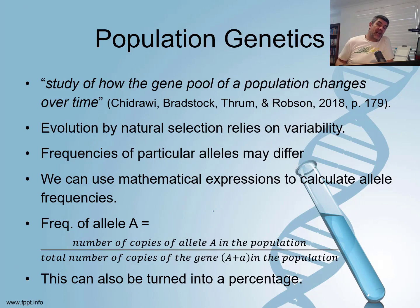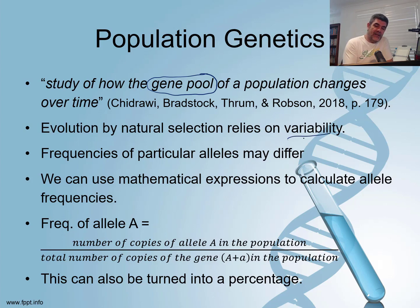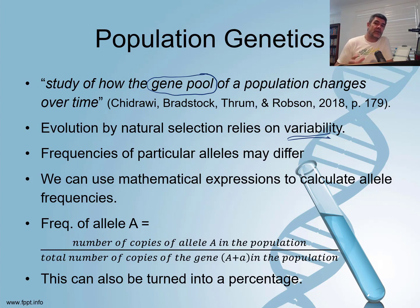Your textbook defines population genetics as the study of how the gene pool of a population changes over time. How does the gene pool change over time? And why would it change? In our year 11 studies, we looked at the fact that evolution acts on variability within the gene pool. We need to have a range of different alleles present, and those different alleles are going to code for different phenotypes or different types of proteins, which may influence which individuals within the population are better fitted to any change that may occur in their environment.